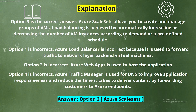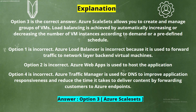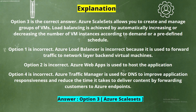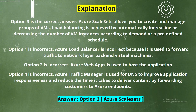Option 1 is incorrect. Azure Load Balancer is used to forward traffic to network layer backend virtual machines. Option 2 is incorrect. Azure Web Apps is used to host the application. Option 4 is incorrect. Azure Traffic Manager is used for DNS to improve application responsiveness and reduce content delivery time by forwarding customers to Azure endpoints.